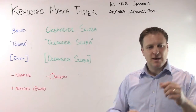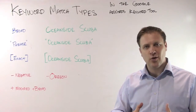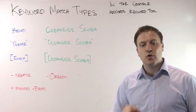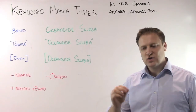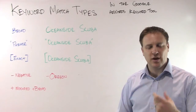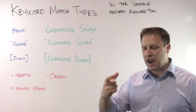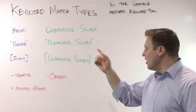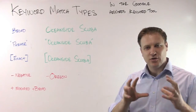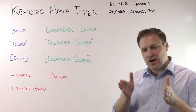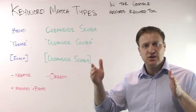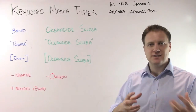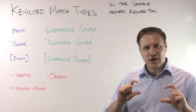Modified broad match basically says that every single word that has a plus before it needs to be included when someone searches. So if I've got '+Oceanside +scuba,' someone searching for 'Oceanside California scuba' or 'scuba shops in Oceanside California' will all show up because it contains both the word 'scuba' and the word 'Oceanside.' It'll also take close synonyms — for example, Google may translate 'Oceanside' into 'by the ocean,' 'on the oceanside,' or 'on the beach,' so you'll have to take those into account as well.